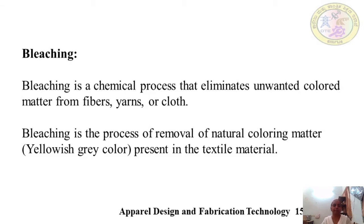Here we are going to discuss about bleaching. Bleaching is a chemical process that eliminates unwanted colored matter from fibers, yarns, or cloth. Bleaching is the process of removal of natural coloring matter — that is, the yellowish-gray color present in the textile material. In general, bleaching is also known as a cleansing agent used for household purposes, such as using bleaching powder to remove stains or spots on articles.